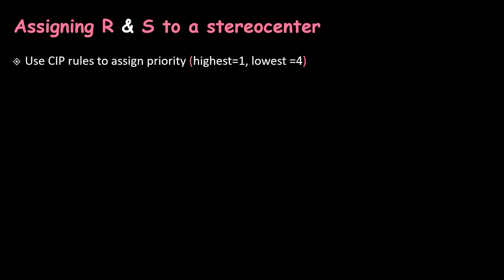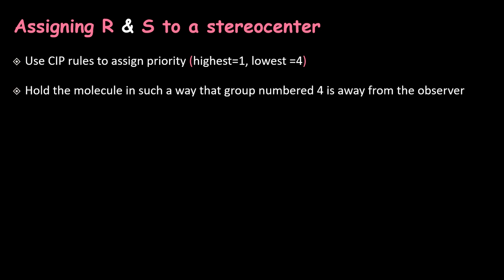Use CIP rules to assign the priority — highest will be numbered 1 and lowest will be numbered 4. After assigning the priority, hold the molecule in such a way that the group numbered 4 is away from the observer.